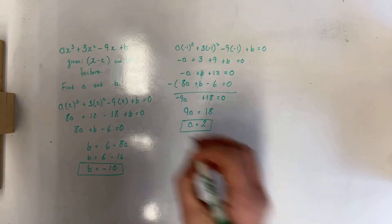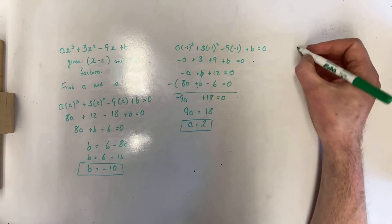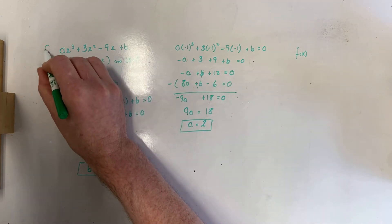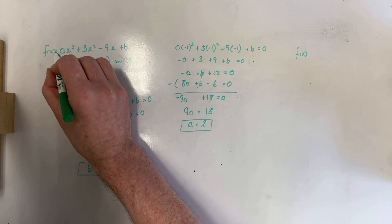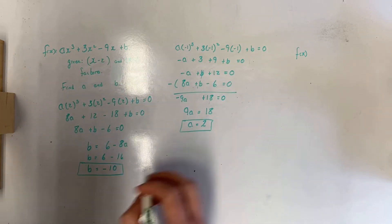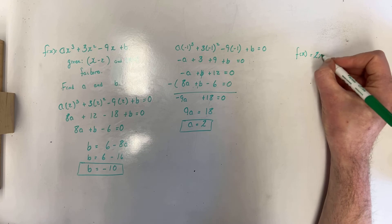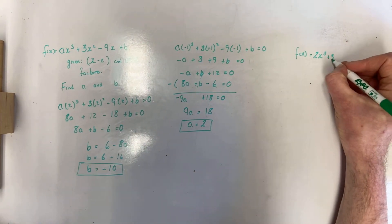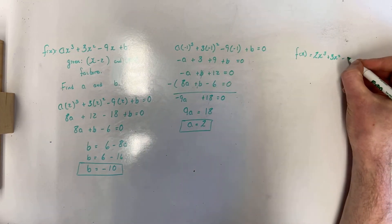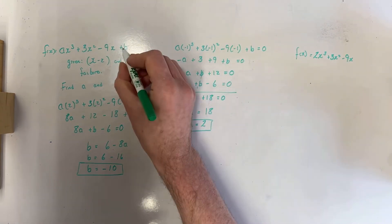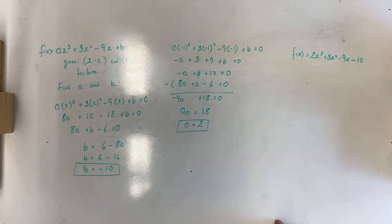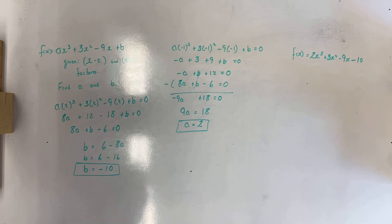My polynomial, which I'll call f(x), is: instead of ax³ we now have 2x³, plus 3x², minus 9x, and plus b becomes minus 10. So f(x) = 2x³ + 3x² - 9x - 10. That's my complete function with all coefficients filled in for a and b.